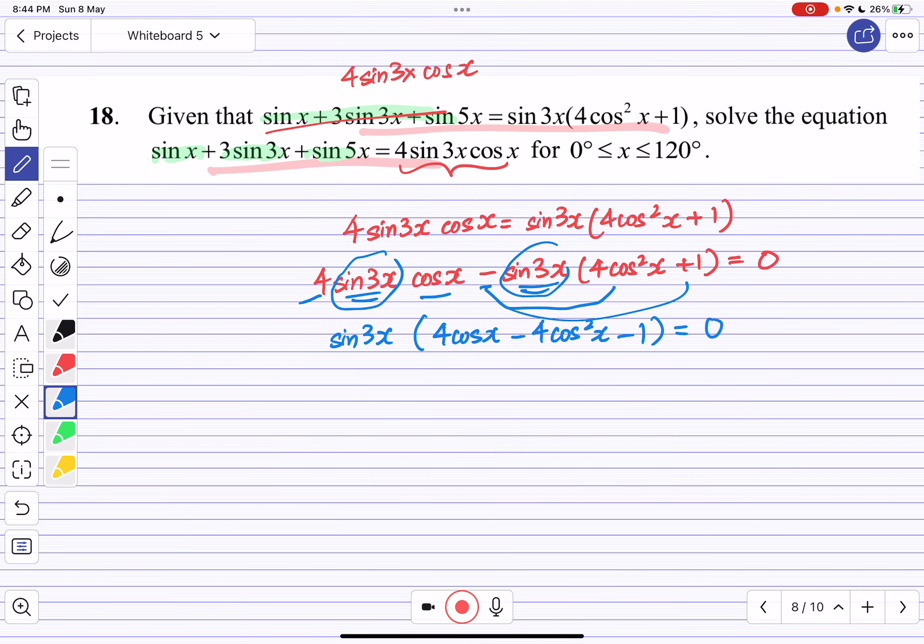Personally I prefer to make my cosine squared positive, so I'm just going to multiply everything by negative one. I have sin 3x(4cos²x - 4cos x + 1) = 0.